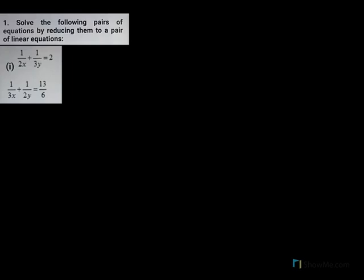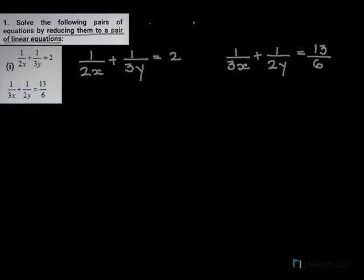Solve the following pairs of equations by reducing them to a pair of linear equations. Now these are the two sets of equations that we need to solve. How are they different from the equations we learned earlier? Have you noticed the x, the variable x and y are all in the denominator? In the earlier equations that we have learned, the variables x and y were in the numerator. However, here they are in the denominator.